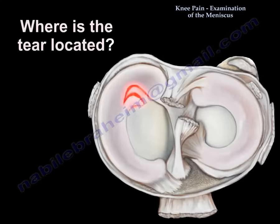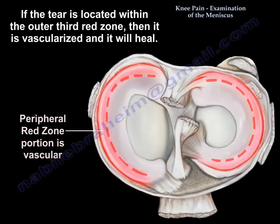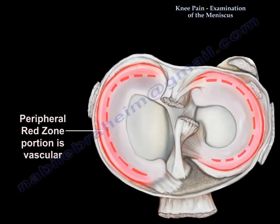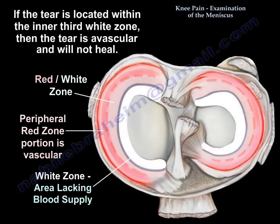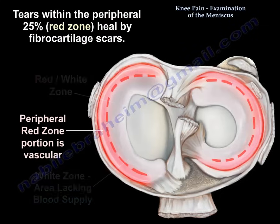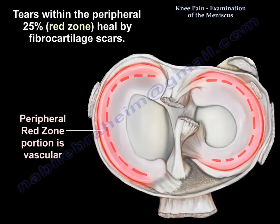If the tear is in the outer third — the red zone — it is vascularized and it heals. If the tear is in the middle third — the red-white zone — it may or may not heal, and probably won't heal. If the tear is in the inner third — the white zone — it is avascular and the tear will not heal. So tears in the peripheral 25%, the red zone, heal by fibrocartilage scar.